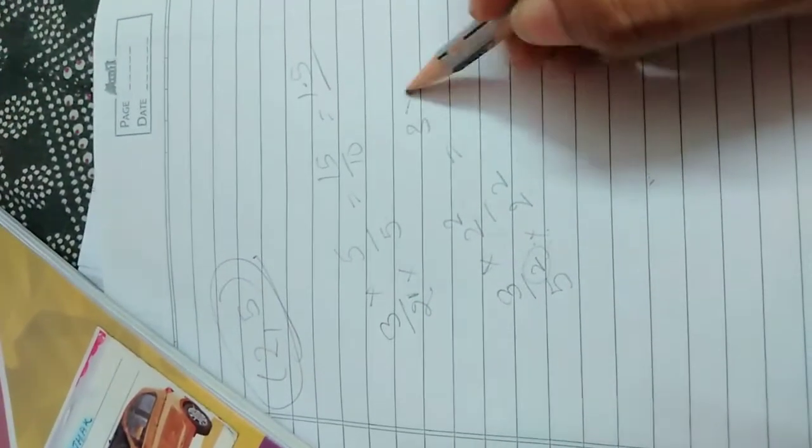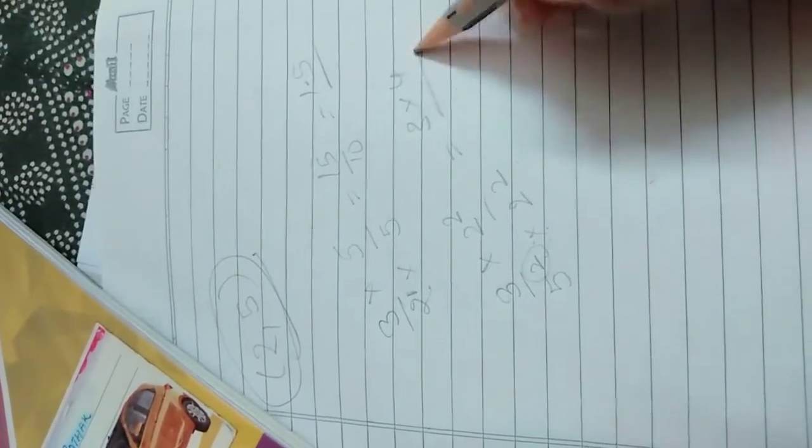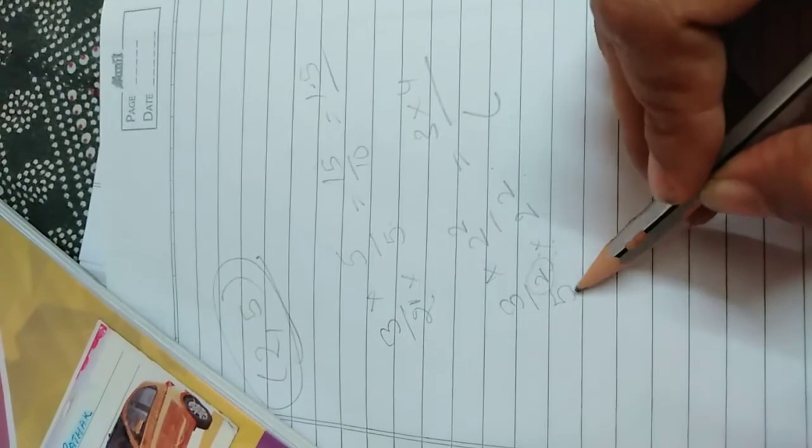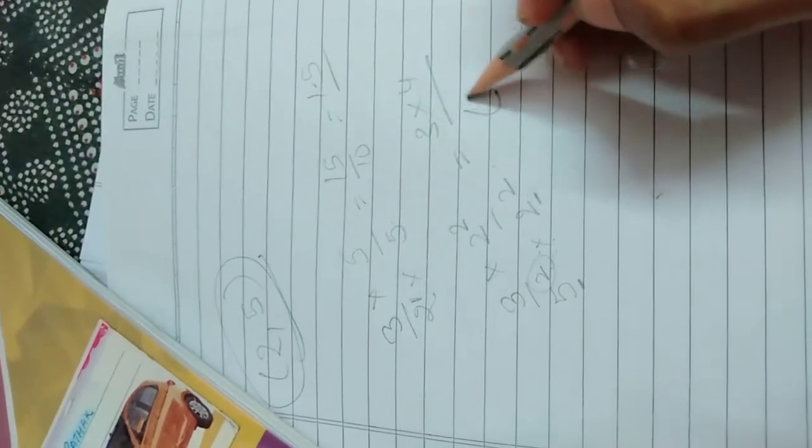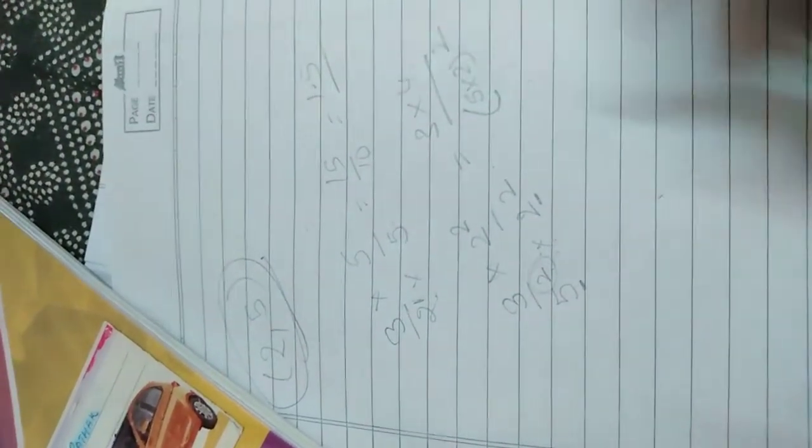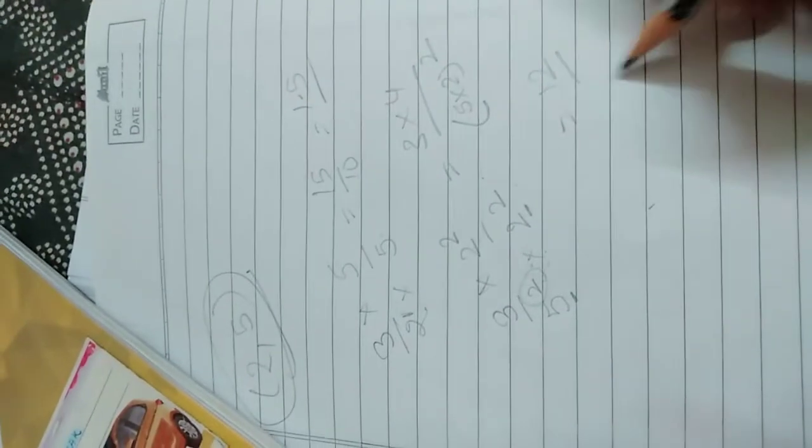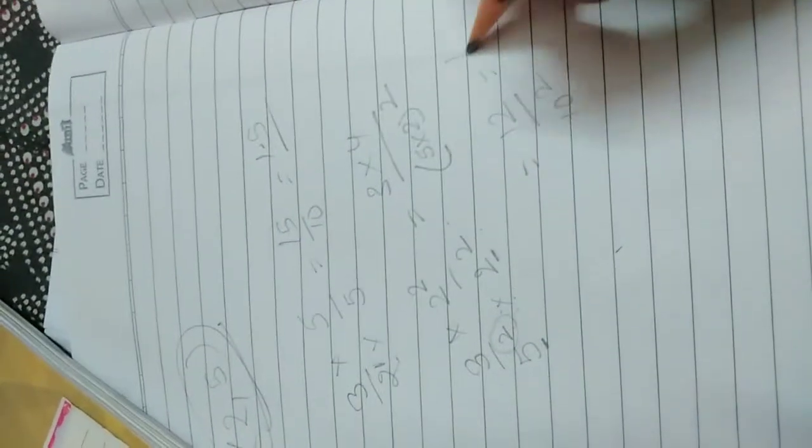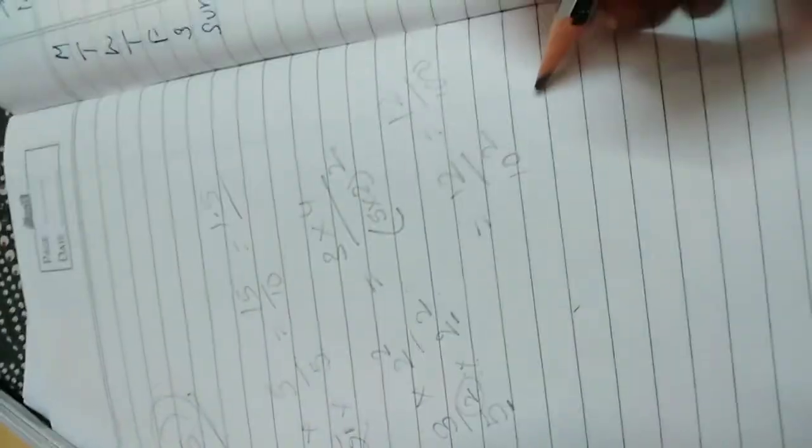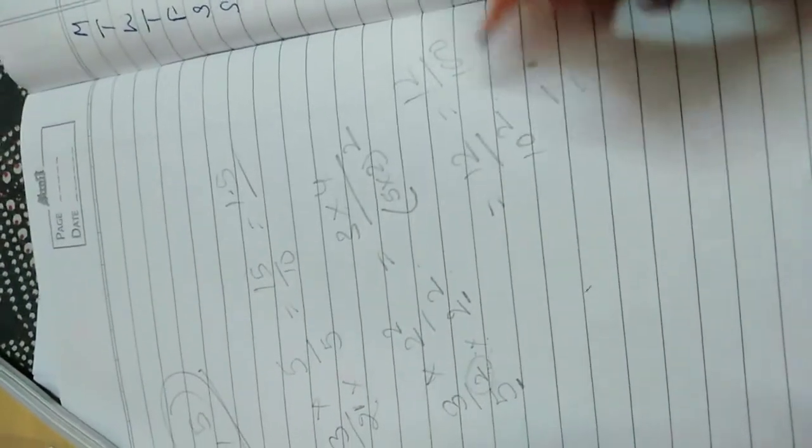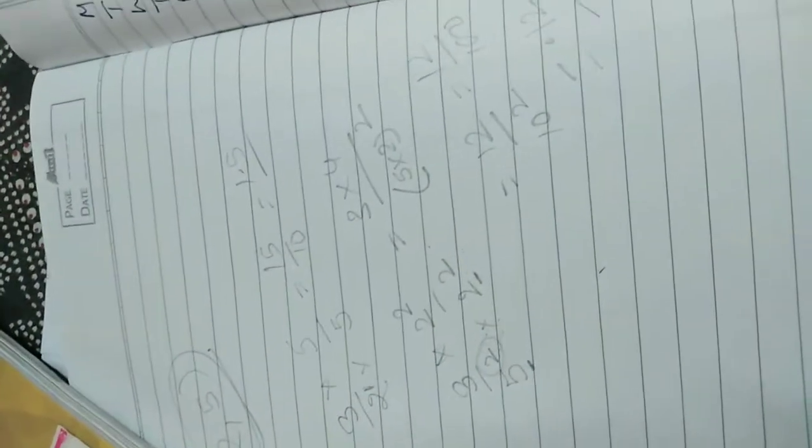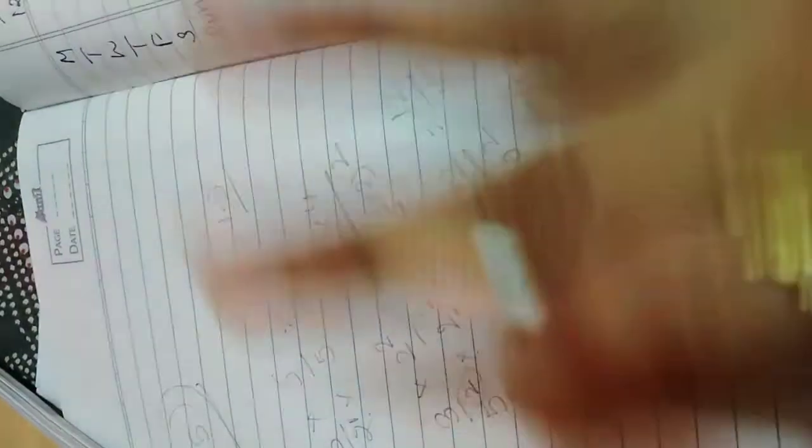Why? Because now 3 into 2 squared is 12 by 5 into 2 whole power 2, that is 10 squared. That is 12 by 100, that is 0.12. So this way this is going to terminate.